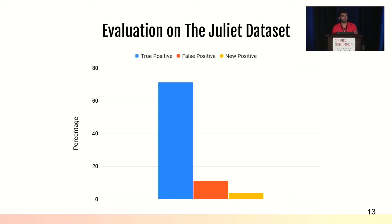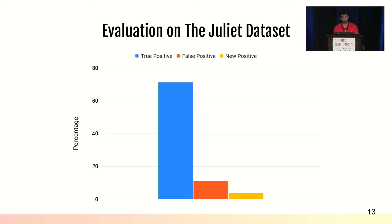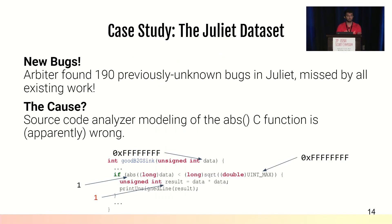Since we evaluated Arbiter against a real-world dataset, we could not estimate its false negative rate. To do that, we evaluated against the Juliet synthetic dataset, which is created to test static analysis applications. Arbiter's true positive rate on Juliet is very similar to that of the real-world evaluation. We also noticed a small slice labeled 'new positives': when reviewing Arbiter's Juliet results, Arbiter reported bugs as positives that the Juliet manifest claimed were not. We found these were actually real bugs in the Juliet dataset — 190 test cases where the manifest states it is not triggerable, but we found it was actually vulnerable.